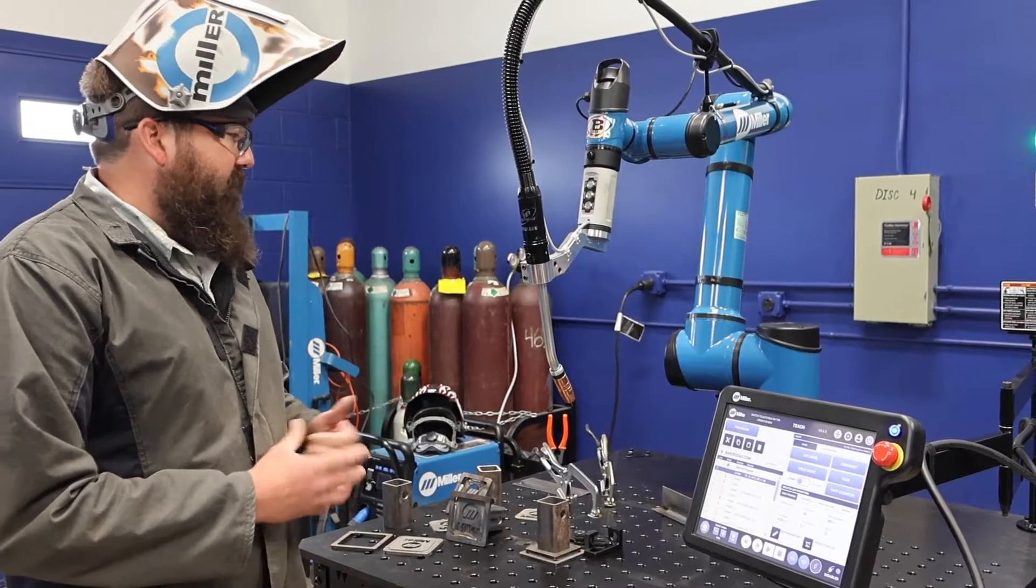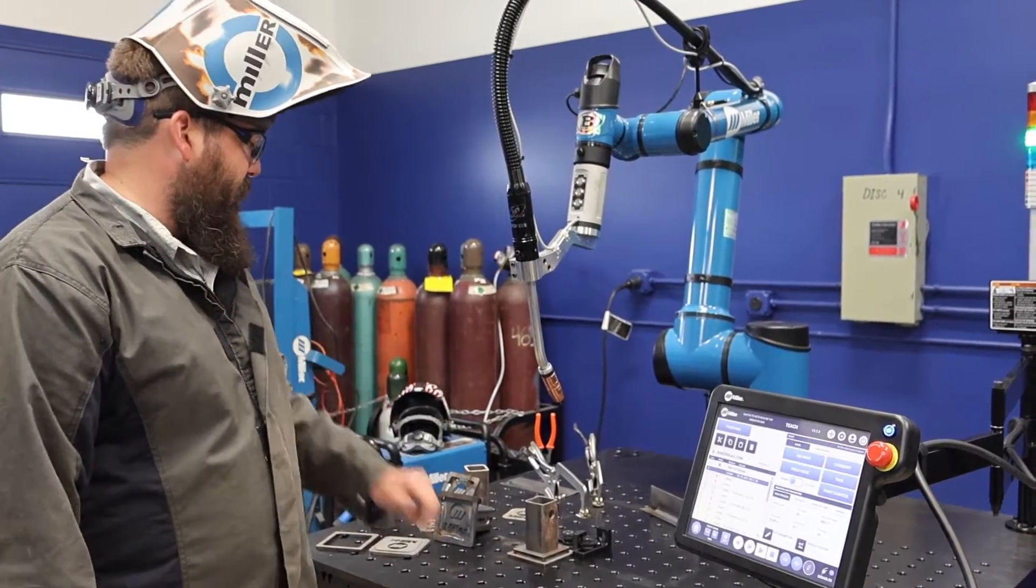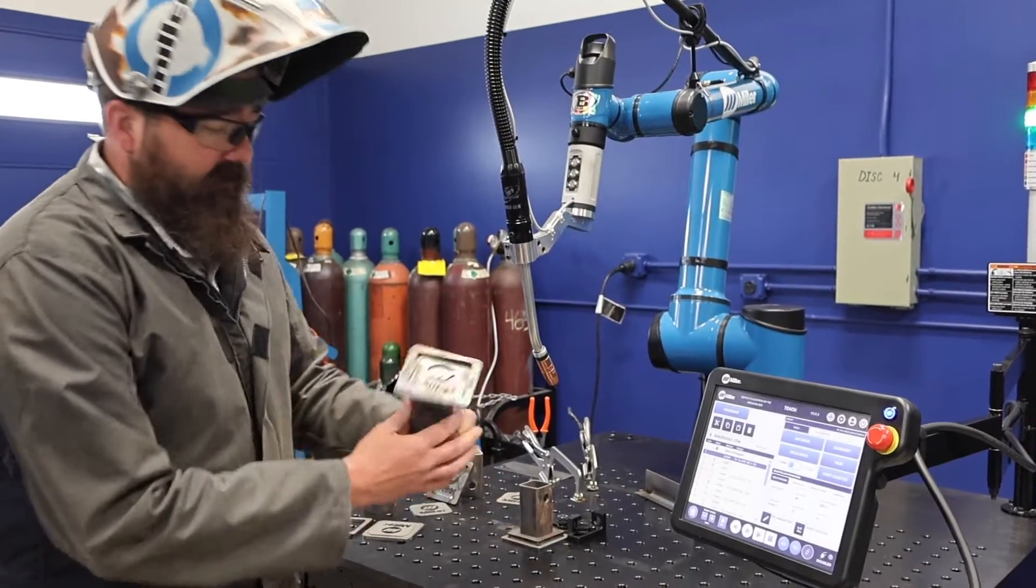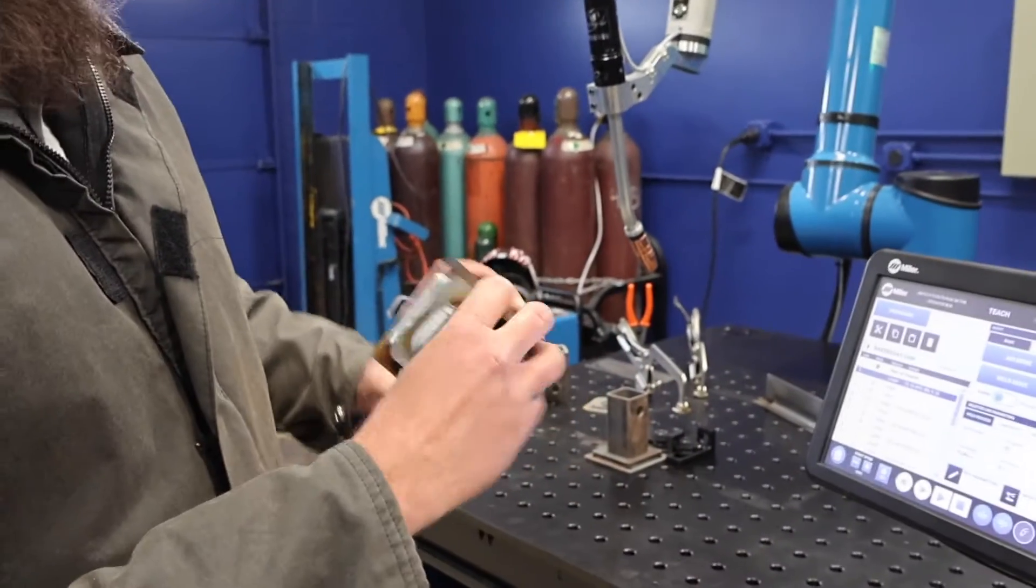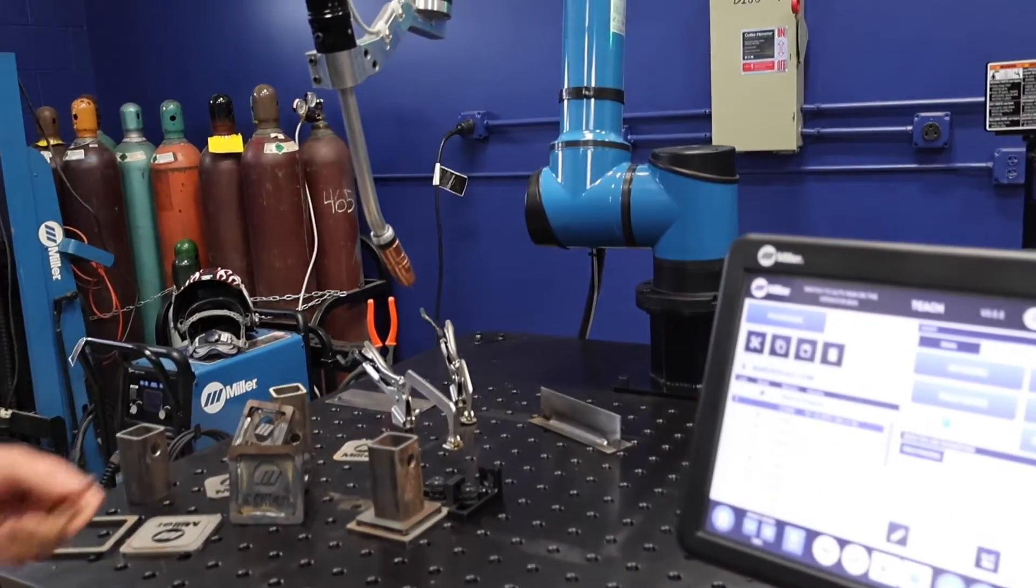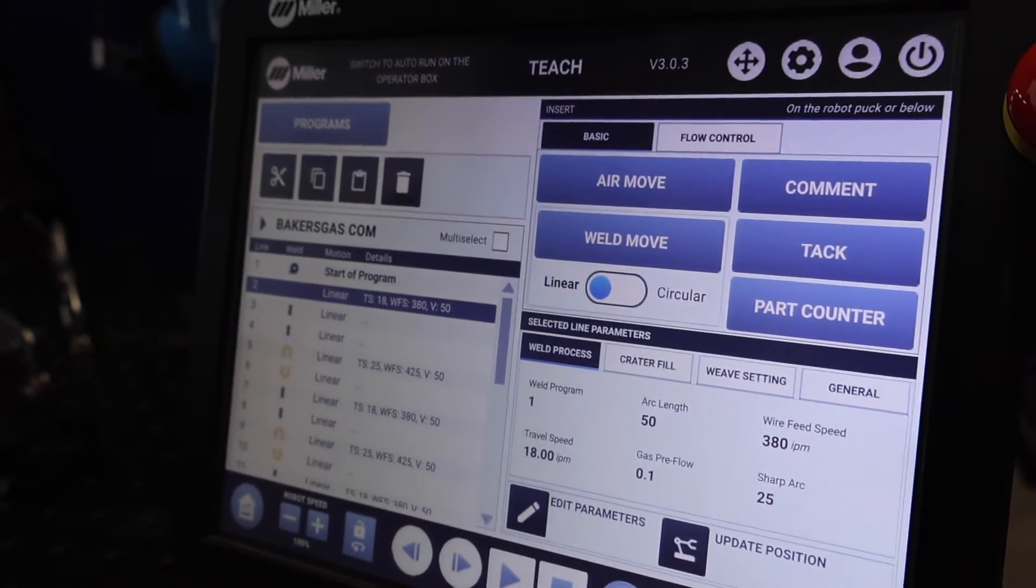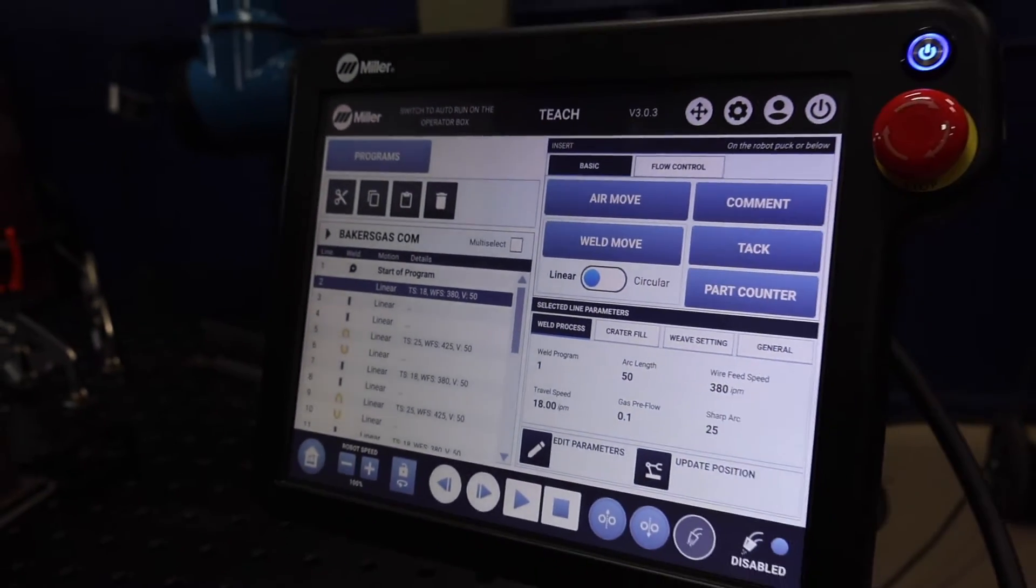They're awesome and easy to program, as you'll see here. I've got it in linear mode, and I'm going to run through this test part. You can see we welded one out - it's just a two-inch hitch receiver. Got it in linear and teach mode. I'll show you where it welds as it walks around this part. Going to auto with weld off.